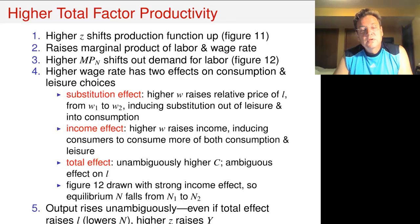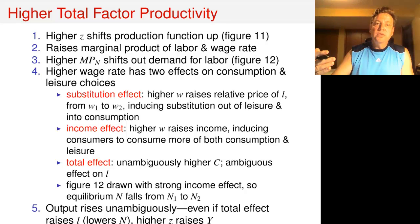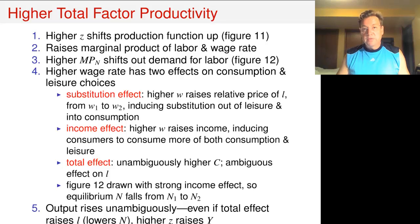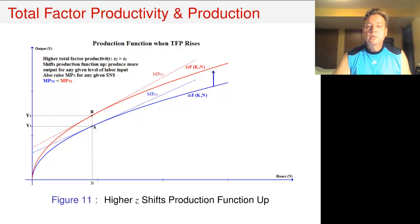In these slides, on figure 12, we assume that the income effect is quite strong so that equilibrium employment falls. But remember, output is going to rise unambiguously. So even if the increase in total factor productivity reduces employment, the higher productivity is going to raise output, because output depends directly on total factor productivity.